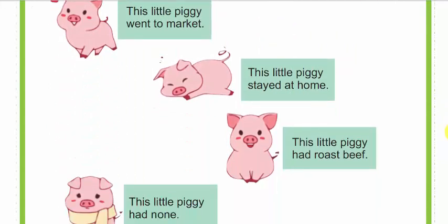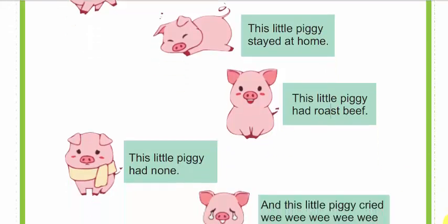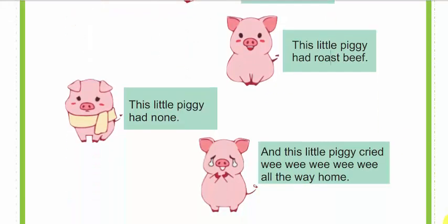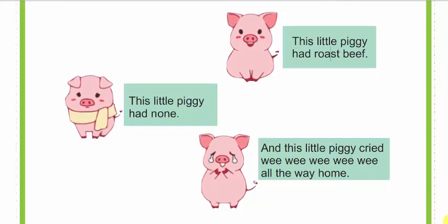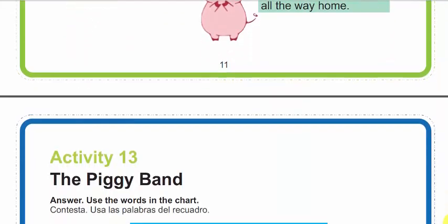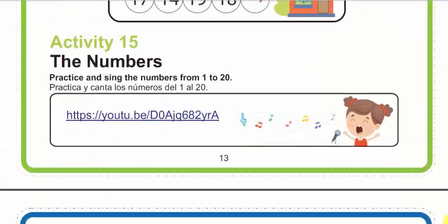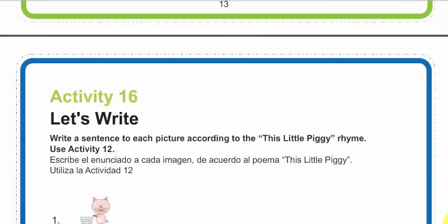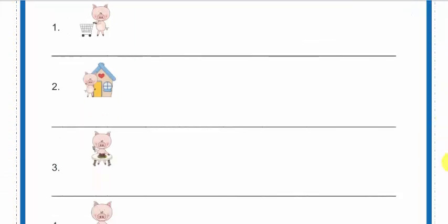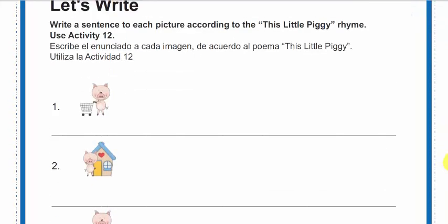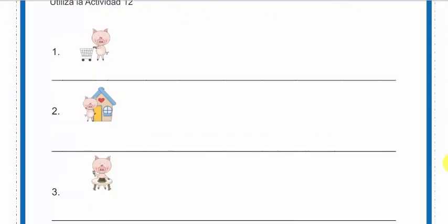This little piggy went to market. This little piggy stayed at home. This little piggy had roast beef. This little piggy had none. And this little piggy cried wee, wee, wee, wee, wee all the way home. Now we are going to use that poem to complete these sentences, tal como nos dicen las indicaciones.